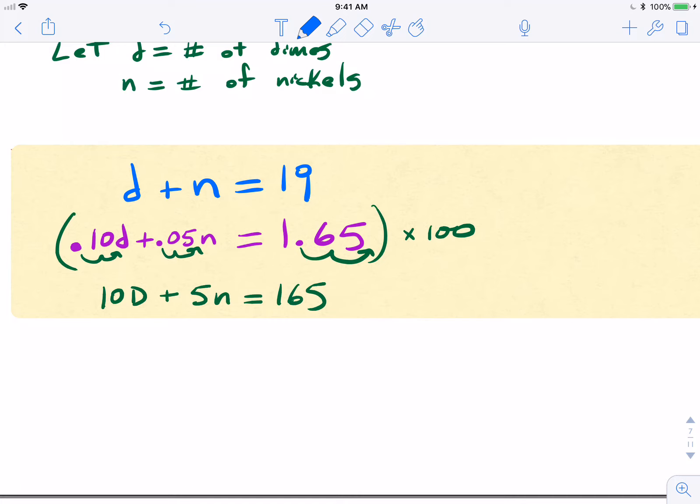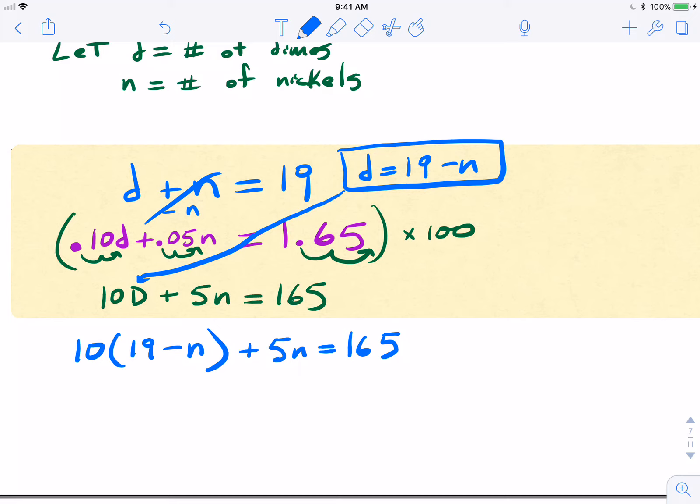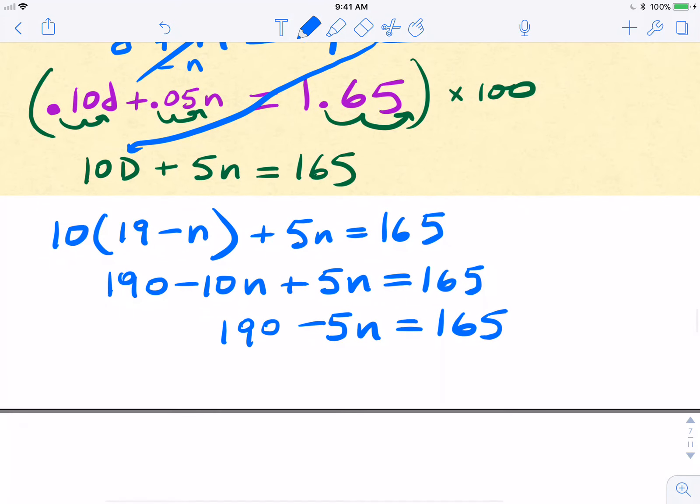So for this one, I'm going to do substitution. Since we did elimination with the last one, I'm going to solve the top equation for D. So I'm going to subtract N from both sides and I get D equals 19 minus N. So if D equals 19 minus N, I'm going to replace D with 19 minus N in the bottom equation. I'm going to distribute. Once again, the choice is yours. I'm just showing you guys both options of elimination and substitution. Usually word problems kind of fall in the middle of the road where either method is about the same. You're going to see in the problem that you guys are going to complete in a second, one method is probably a little bit better to use than the other.